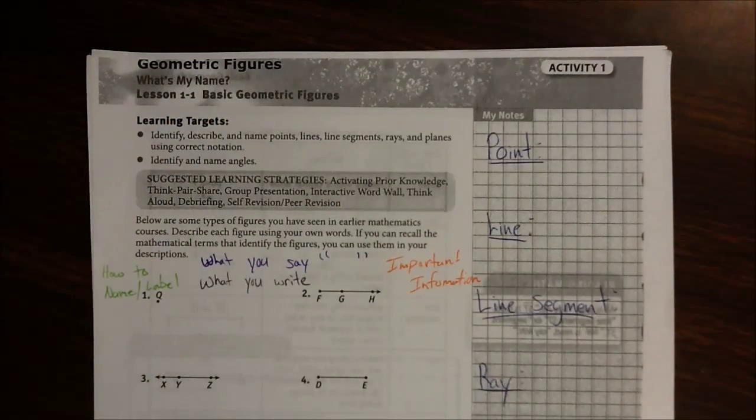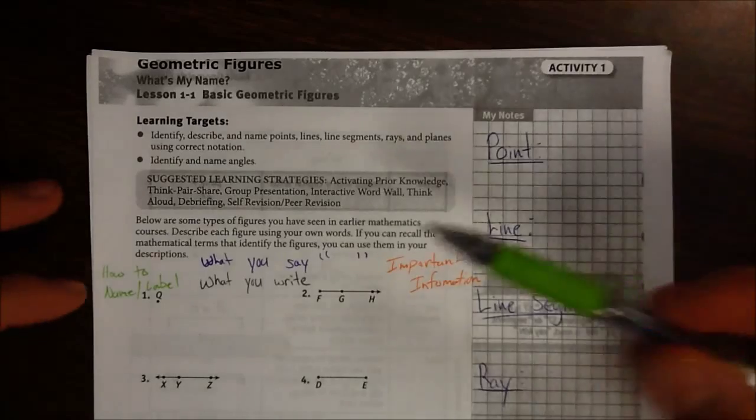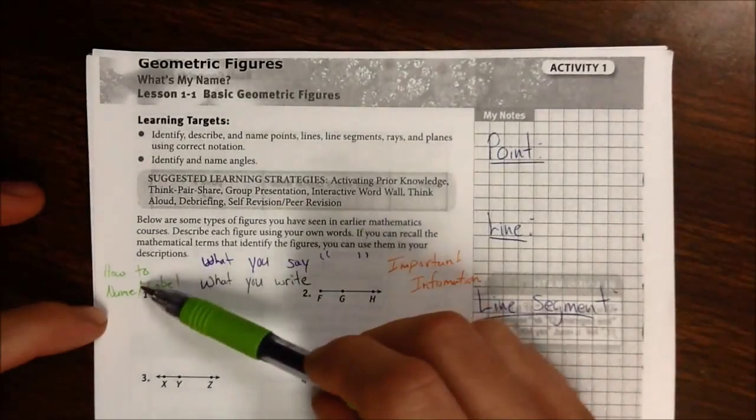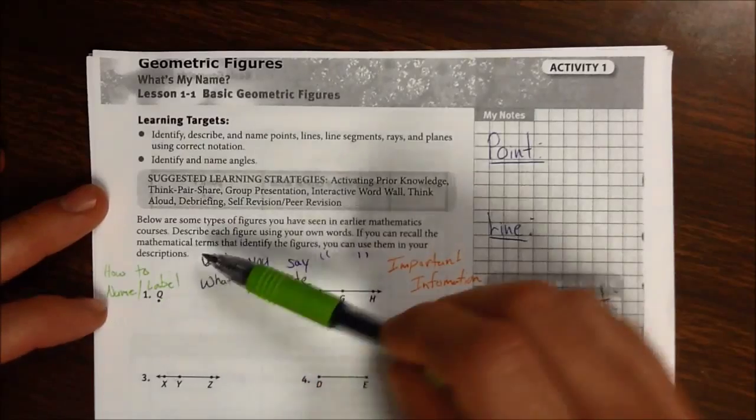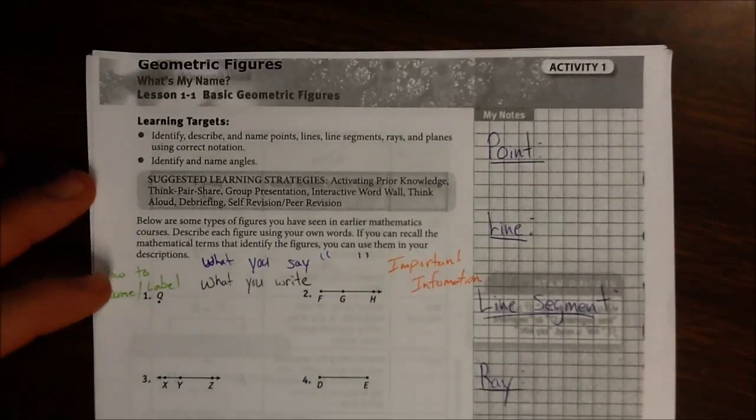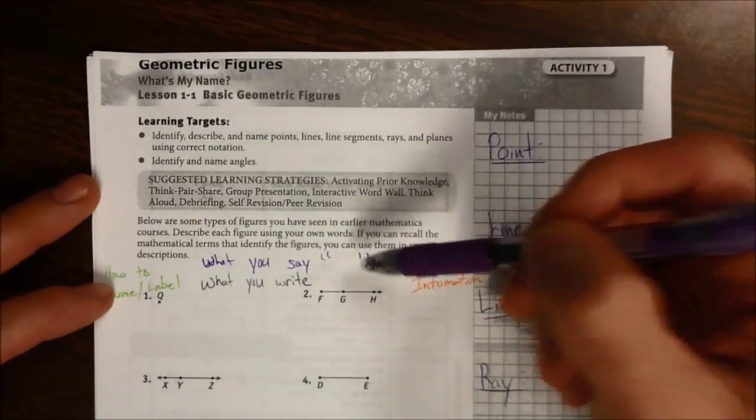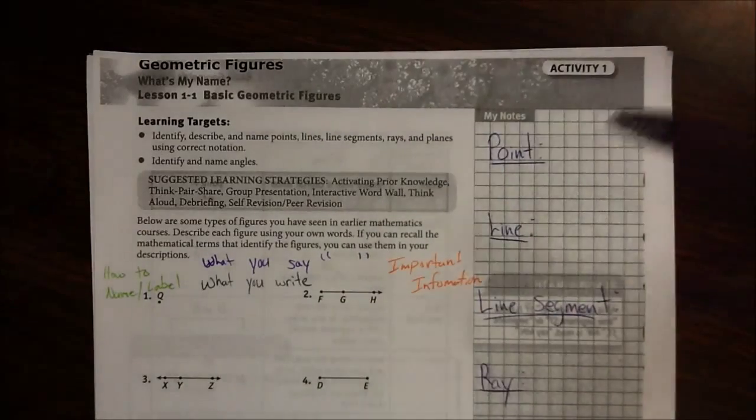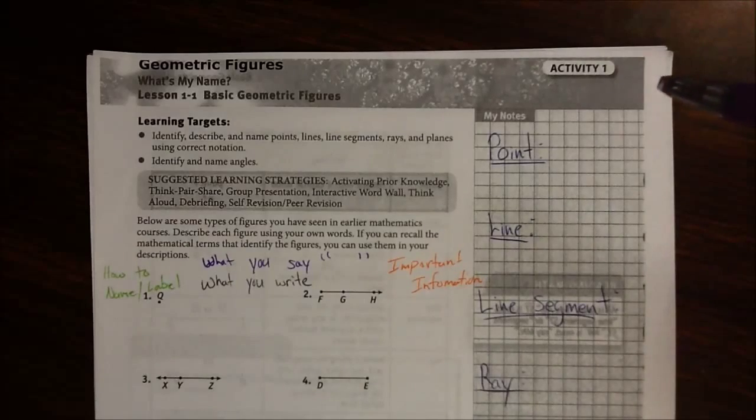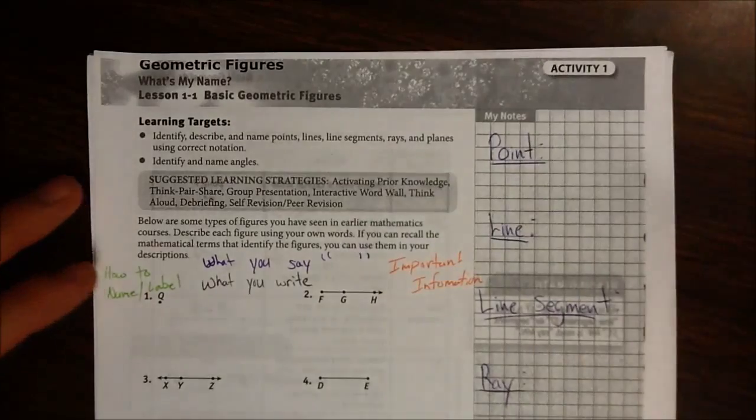So as you see, I already have a couple of things written down. In green ink, I'm going to write how to name and label these geometric figures. In purple ink, also in quotation marks, I'm going to write what you need to say. So when you speak geometry or when you read it, how are you supposed to interpret these symbols in this notation? That's going to be in purple ink.